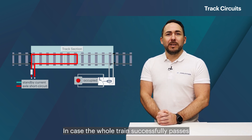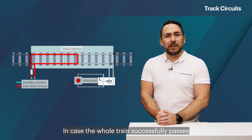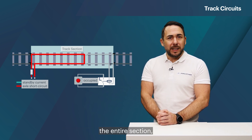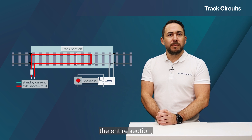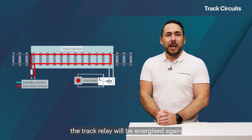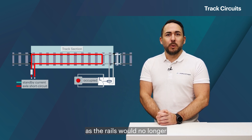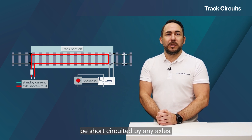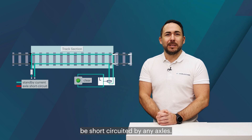In case the whole train successfully passes the entire section, the track relay will be energized again as the rails would no longer be short-circuited by any axles.